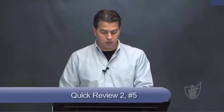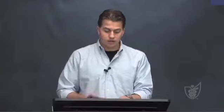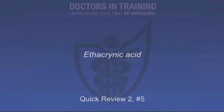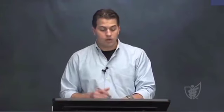What diuretic is used in sulfa-allergic patients when diuresis is required? Ethacrynic acid. Which diuretic can cause hypocalcemia and which can cause hypercalcemia? This is hugely testable. Remember: loops lose calcium, thiazides retain calcium. Loop diuretics like furosemide lose calcium into the urine — useful to treat hypercalcemia. Thiazides retain calcium — useful when you want to prevent calcium stones.